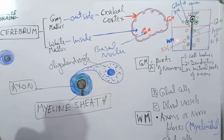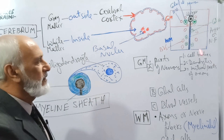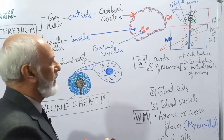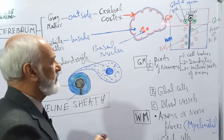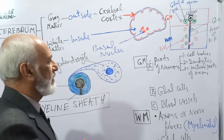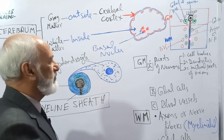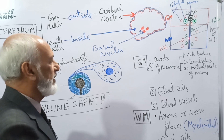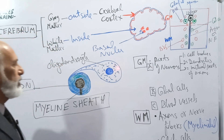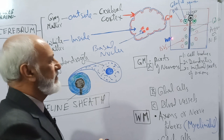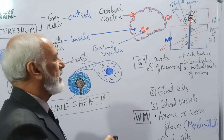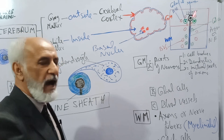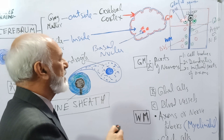This lipid-enriched layered structure surrounding the axon is known as myelin sheath. Because this myelin sheath is occupied by fat, this is why the white matter appears white in color. The parts of axons located in the grey matter of the cerebral cortex are non-myelinated — this is why the grey matter appears grey in color with the naked eye.